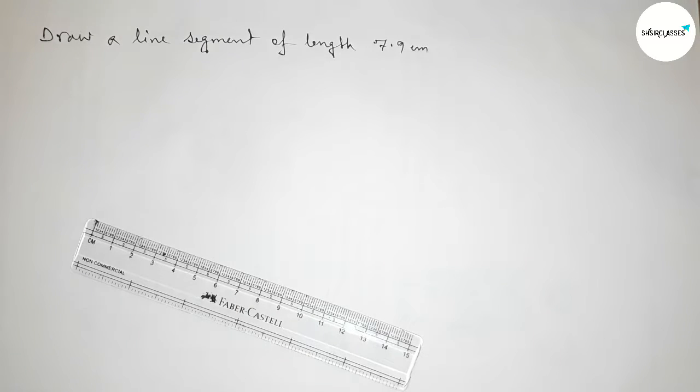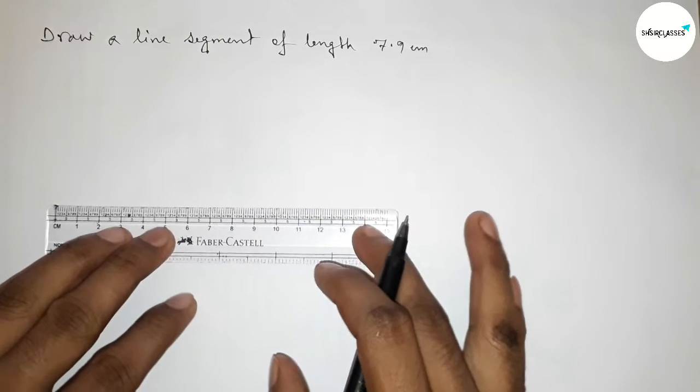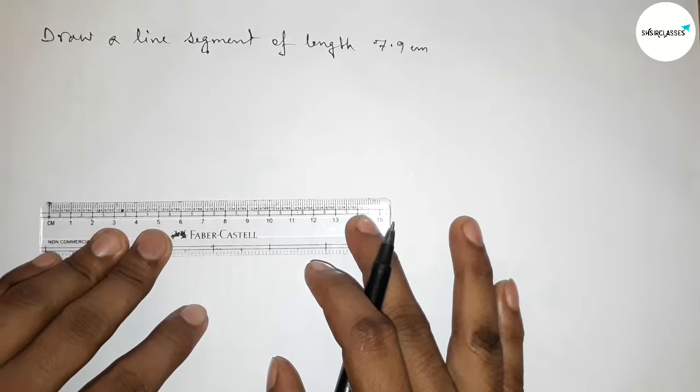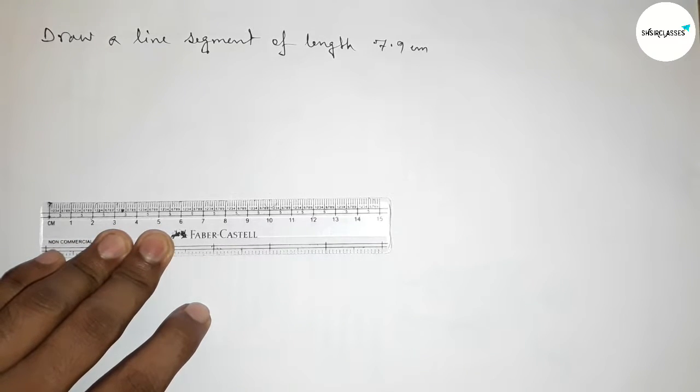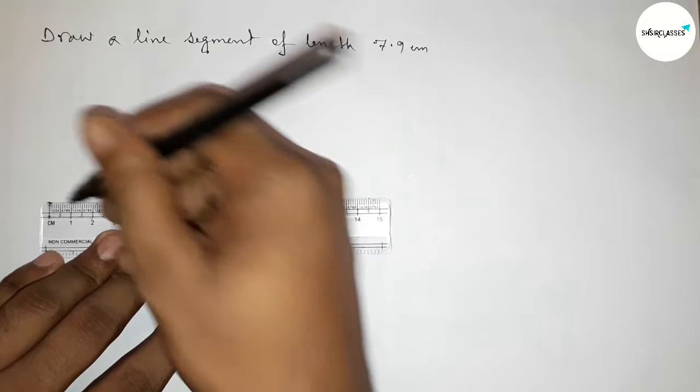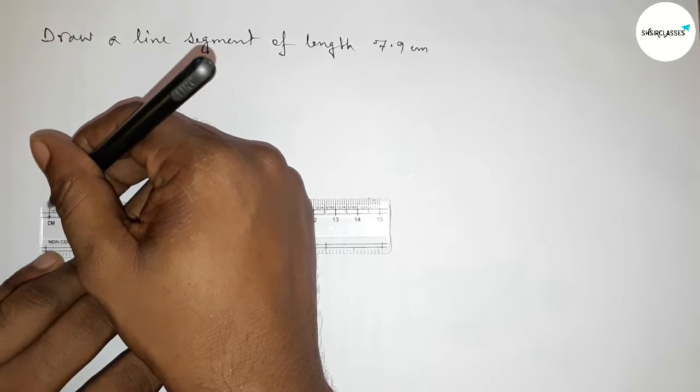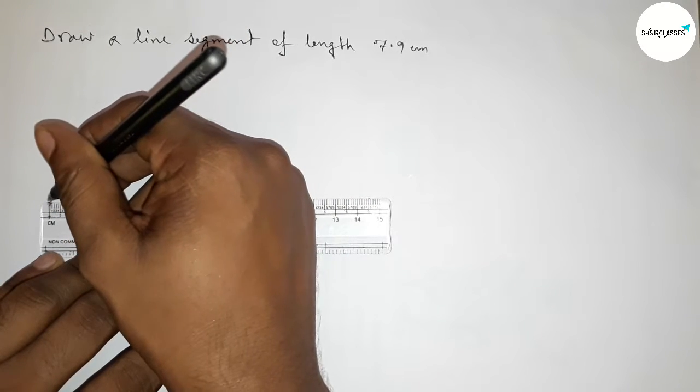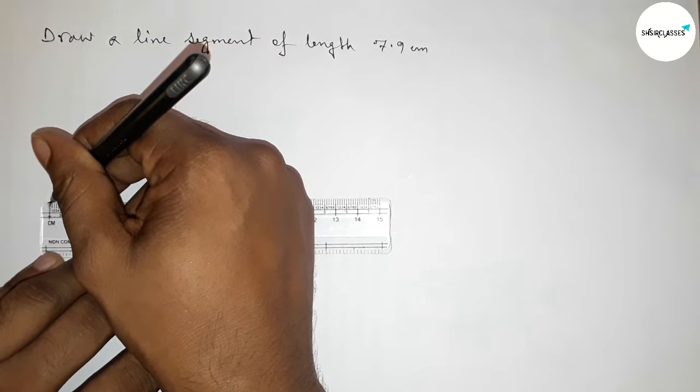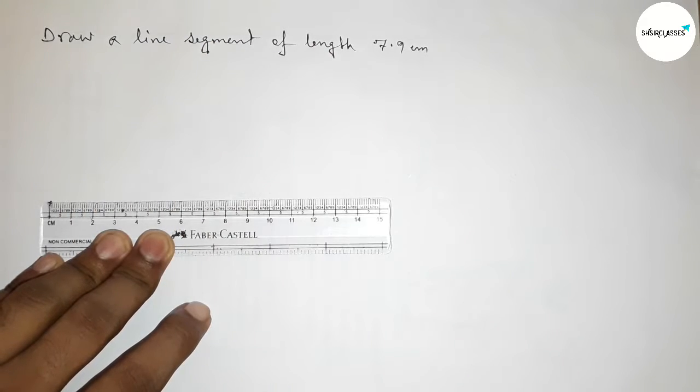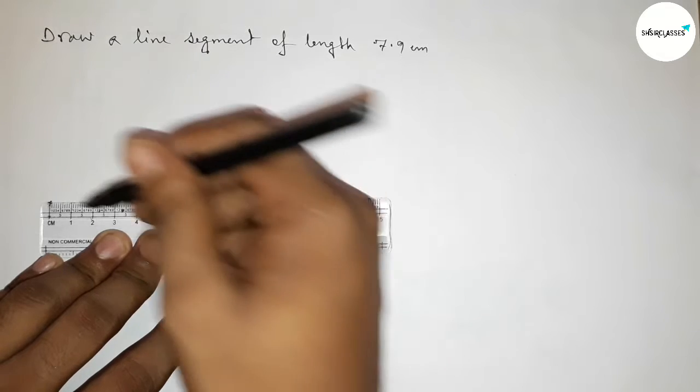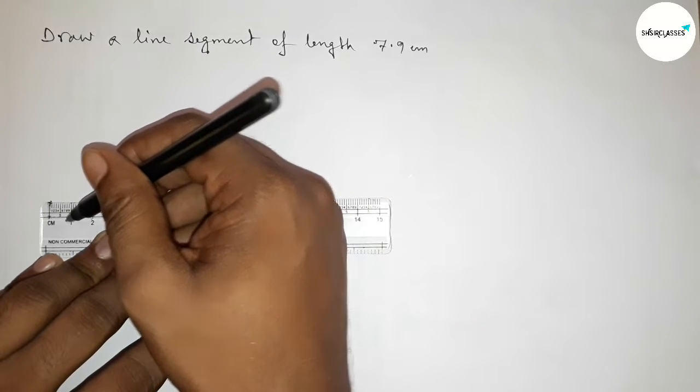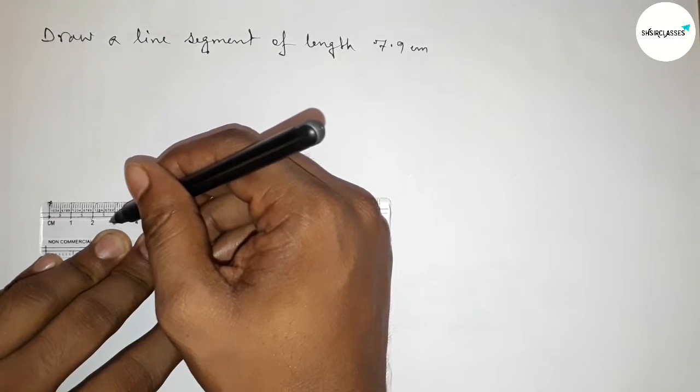First, place the scale here perfectly, then measure the length 7.9 centimeters. This is the starting zero, so first mark the zero here. Next, start counting: this is zero, one, two, three...